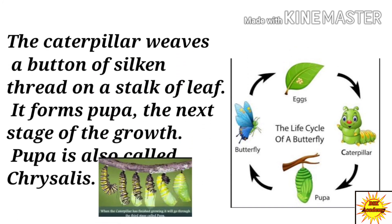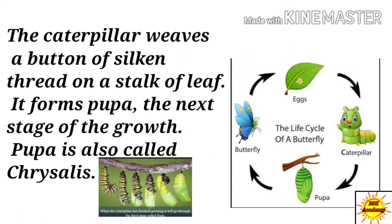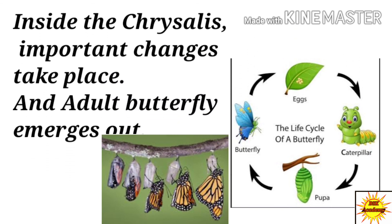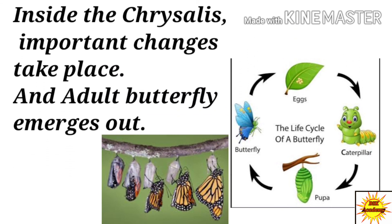The caterpillar weaves a button of silken thread on a stalk or leaf and forms the pupa, the next stage of growth. The pupa is also called chrysalis. Inside the chrysalis, important changes take place and an adult butterfly emerges out.